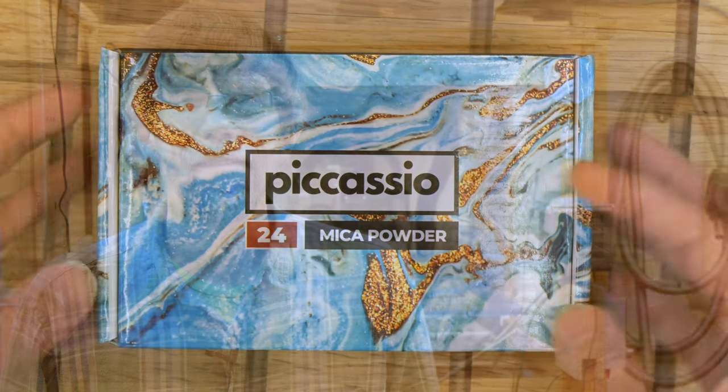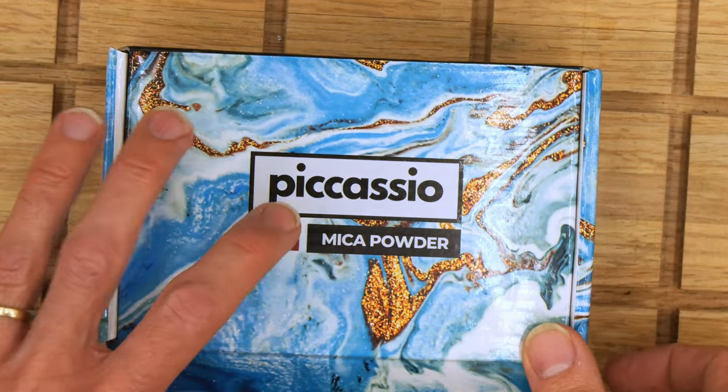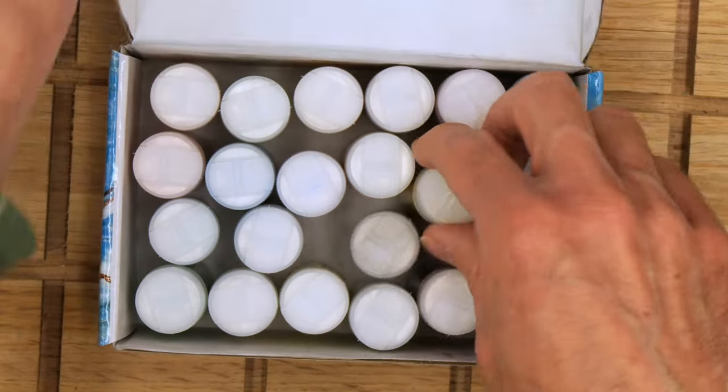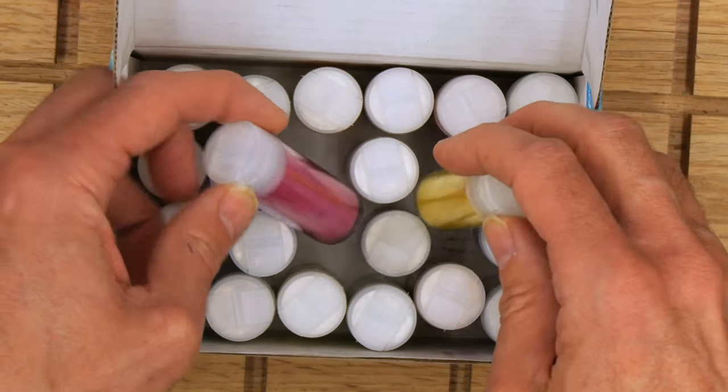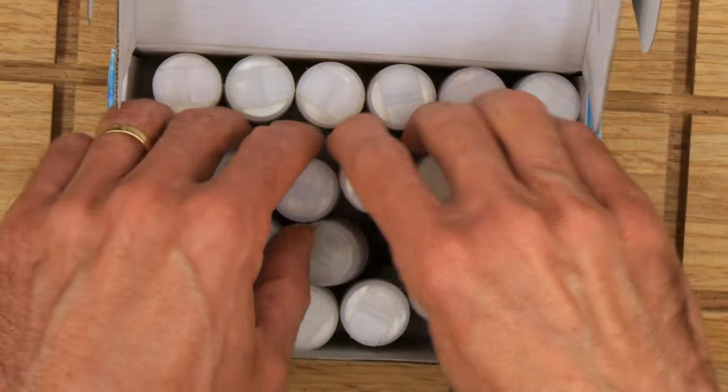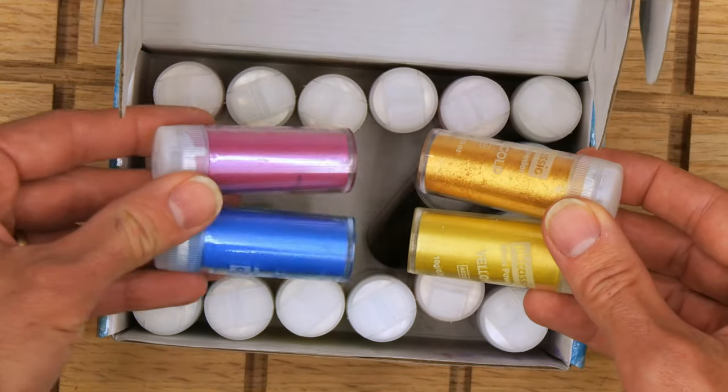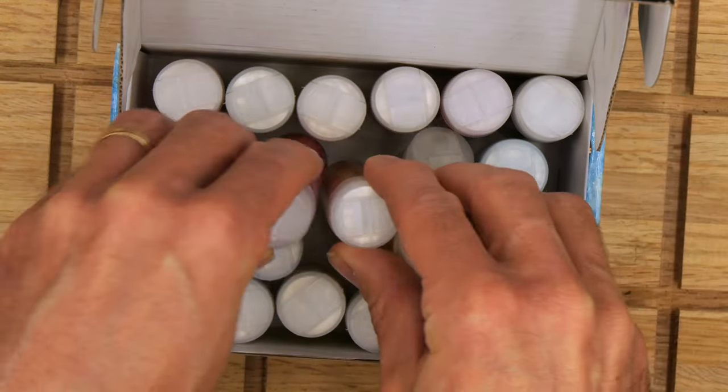In this part two I'm going to be doing the actual inlay into those pockets using epoxy mixed with colored mica powder and this is the mica powder I bought. I like this particular one for the simple reason that it comes in these little bottles instead of bags so I think it'll be a little easier to handle but this is a set of 24 different colors so I got a bunch of different colors to use.